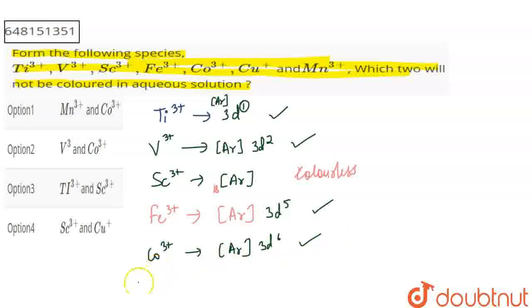Next, Cu positive. Its configuration is Ar 3d¹⁰, so it will be paired, so this will not be colored. So the answer is scandium 3 positive and copper positive, option 4 correct. Thank you.